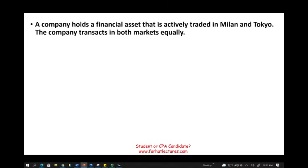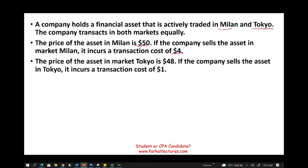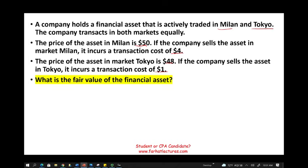Let's assume a company has a financial asset actively traded in two markets: Milan, Italy and Tokyo, Japan. The price of the asset in Milan is $50, and if the company sells the asset it incurs a transaction cost of $4. The price of the asset in Tokyo is $48, and the transaction cost there is $1. The question is: what is the fair value of the financial asset?